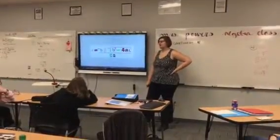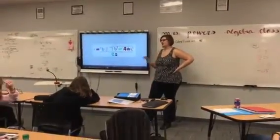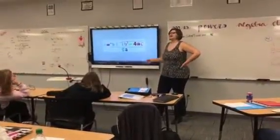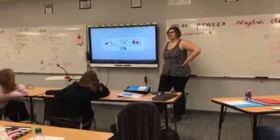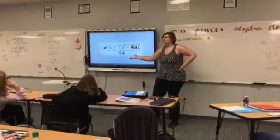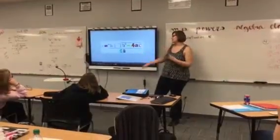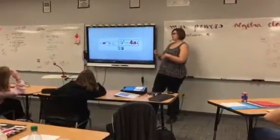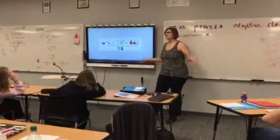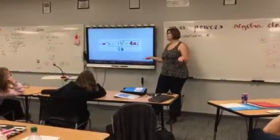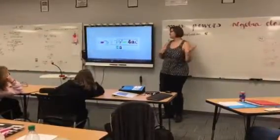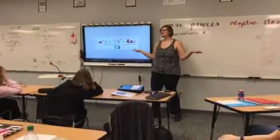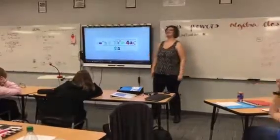A key thing for learning or memorizing for me is just repetition. So I just look at this over and over again and I get it. X equals negative B plus or minus the square root of B squared minus 4 times A times C, all of that over 2A.